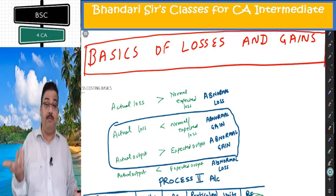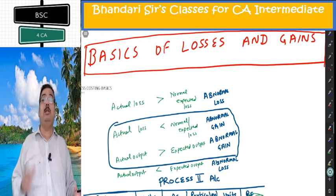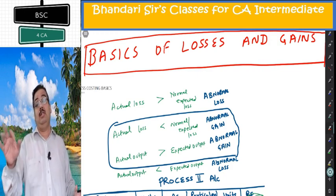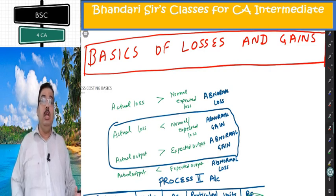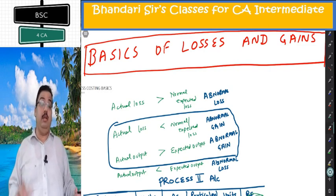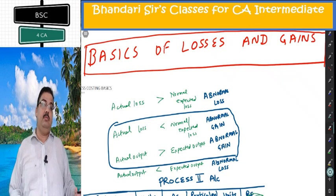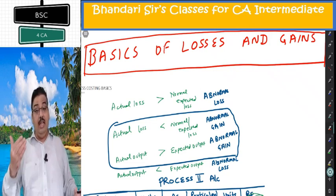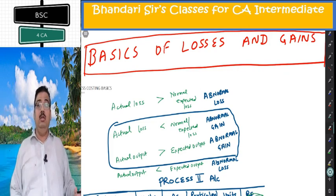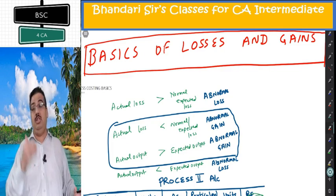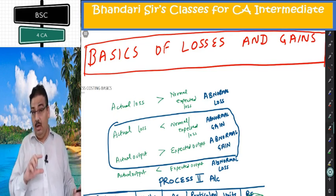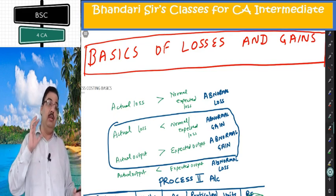Anything over and above normal loss is abnormal loss. If I am expecting 18% and in a particular batch 23% fail, then 5% is abnormal loss. In a particular batch, if students are more hard-working and only 16% fail, then 2% saved is abnormal gain. Anything more than normal loss is abnormal loss; anything less than normal loss is abnormal gain. These three terms — normal loss, abnormal loss, abnormal gain — are very important for this chapter.